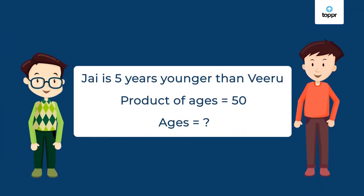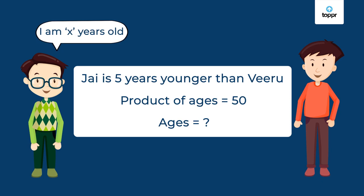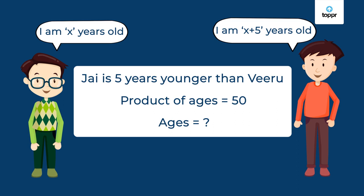Let's express this information mathematically. We don't know Jai's age, so let's say that it is X years. We know that Jai is five years younger than Viru, so Viru is five years older than Jai — meaning Viru's age would be X plus 5 years. We also know that the product of their ages is 50, so X multiplied by (X plus 5) equals 50.